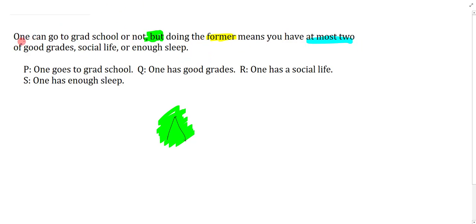The left conjunct is one can go to grad school or not. So one goes to grad school or not literally just says P or not P. That isn't very exciting. But doing the former - the former here is a reference term and it always refers to the first option. So the former here is can go to grad school, not the negation form.